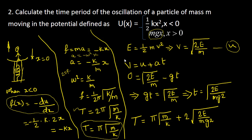Using kinematics: v = u + at. The particle goes up with initial velocity u = √(2E/m) and decelerates under gravity. At the top, v = 0, so 0 = √(2E/m) − g·t. Therefore t = √(2E/m)/g, and the time to go up and come back is 2t = (2/g)√(2E/m).